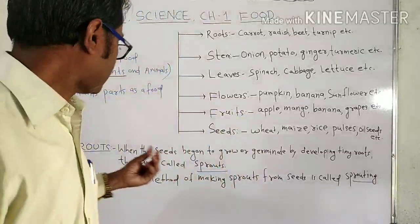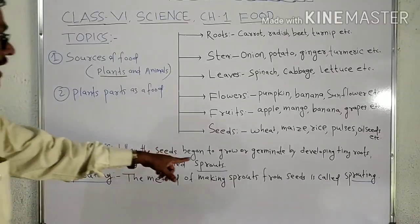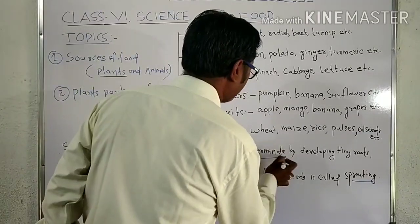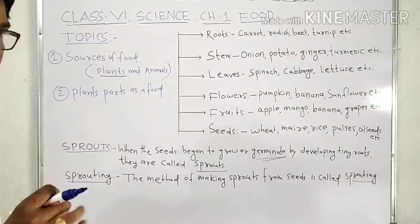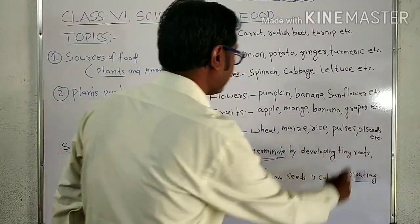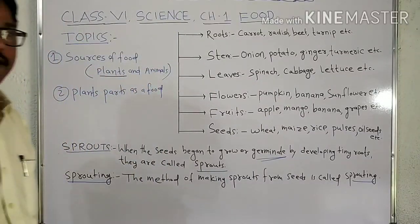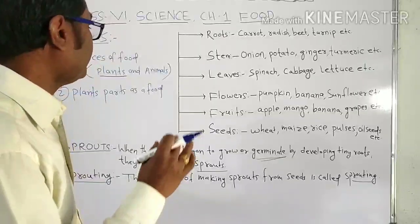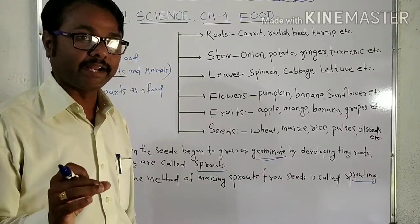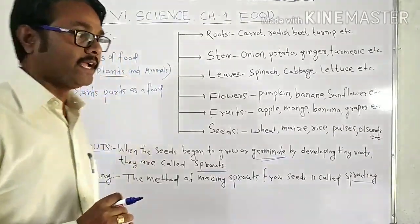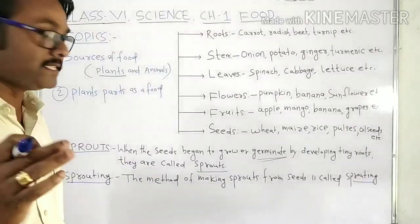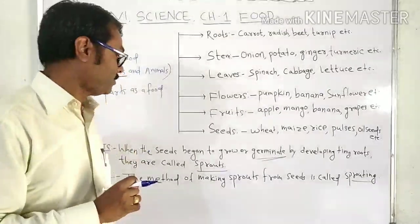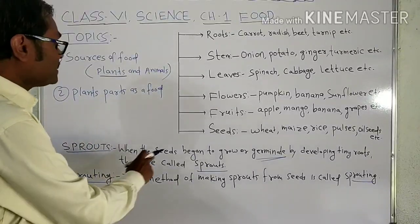An important term mentioned here is 'sprouts.' What is a sprout? When seeds begin to grow or germinate — by developing tiny roots — those are called sprouts. In Hindi, sprouts are called 'ankur.' You must take sprouted grain in breakfast because it is very nutritious food, containing vitamins A, B, and C.